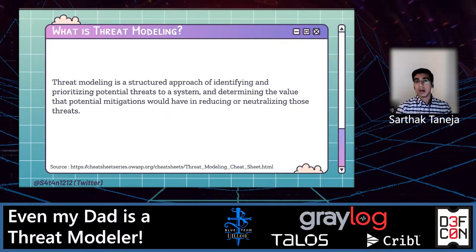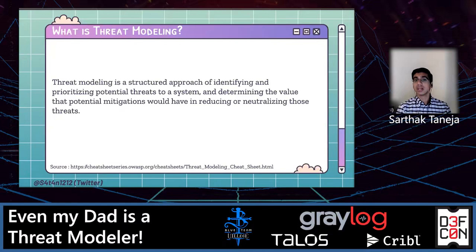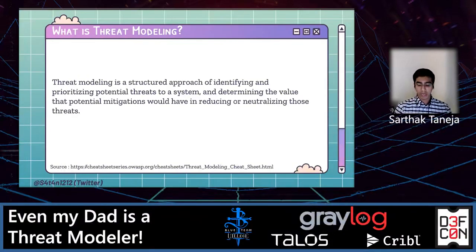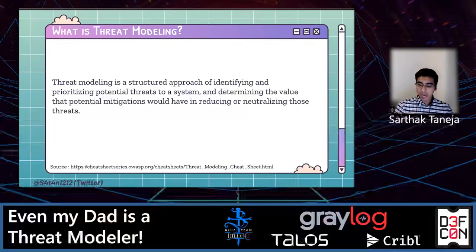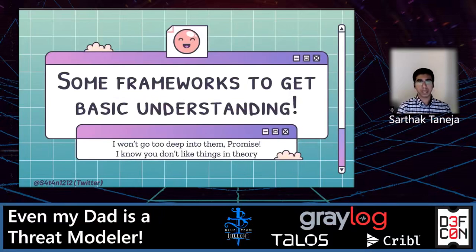It reminds me of last week — I was attending the Diana Initiative virtual conference and there was a talk about threat modeling your mental health, and it was a superb talk. Then we can identify threats by thinking about what could go wrong. When we recognize threats, we need to understand what we are going to do to defend against those threats. The final step is: if we know there are threats and we know from whom we have to defend ourselves, are we acting on those steps or not? If we have acted, then what's the residual risk?